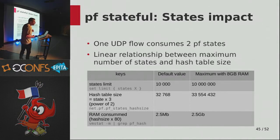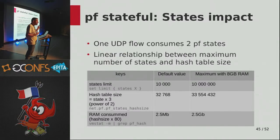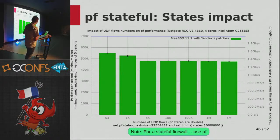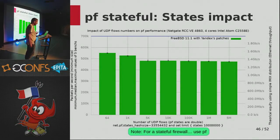With PF for stateful testing: PF creates two states per flow (one per direction). There's a linear relationship and PF has the same state limit tied to its hash table size. On my Netgate with 8GB RAM I increased the hash table to use about 2.5GB, allowing roughly 10 million states and thus 5 million UDP flows. The result: PF barely cares about the number of states. If you want a stateful firewall handling complex rules and many connections, now you know - use PF.